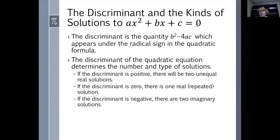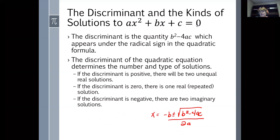If you have a quadratic equation in standard form and look at the quadratic formula, the radicand — the stuff underneath the square root symbol — has a name: we call it the discriminant. The discriminant is the quantity B squared minus 4AC, and it tells us about the nature of our solutions to the quadratic equation.